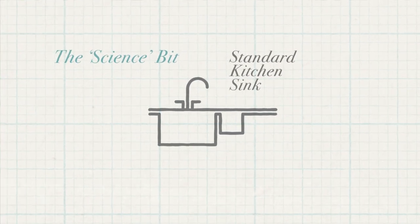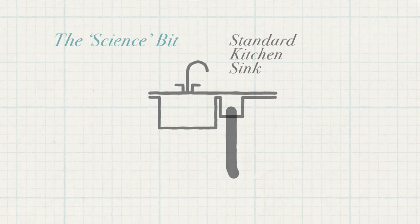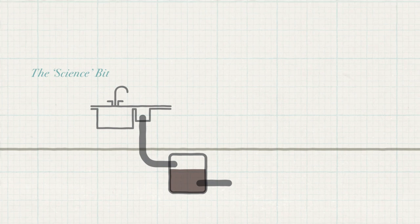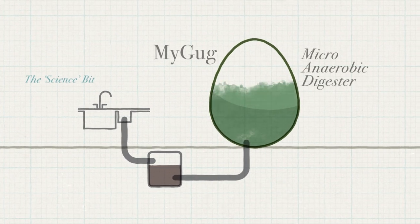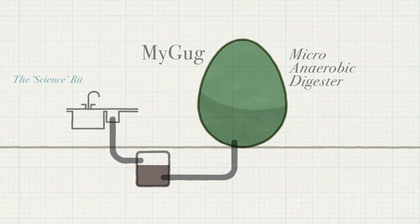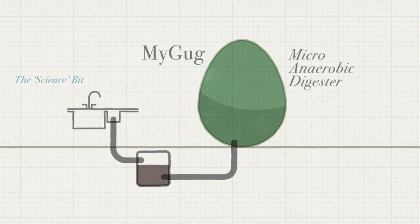Food waste, raw and cooked, is macerated within a standard kitchen sink. It is then fed to MyGug, an insulated egg-shaped micro-anaerobic digester that sits in your garden.